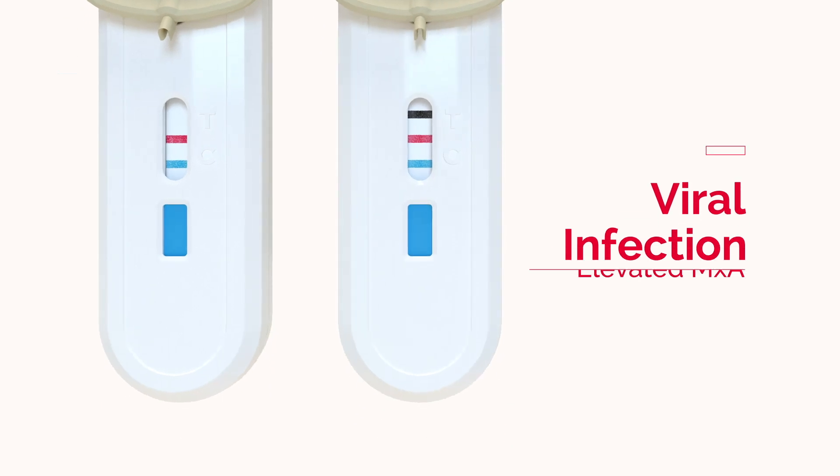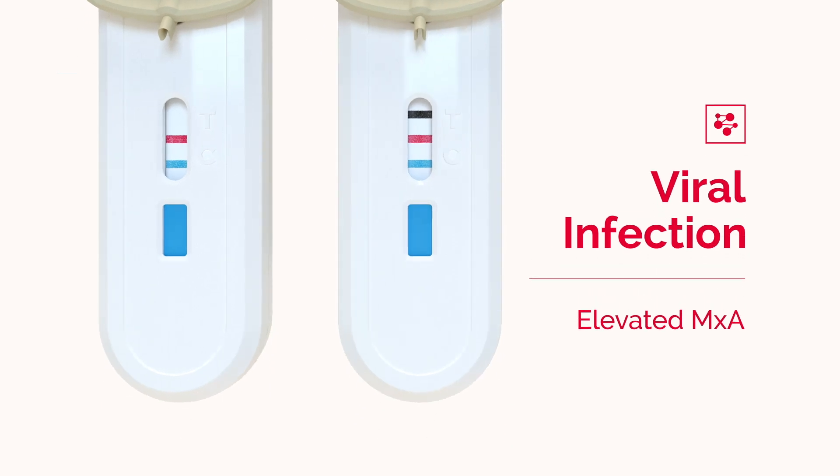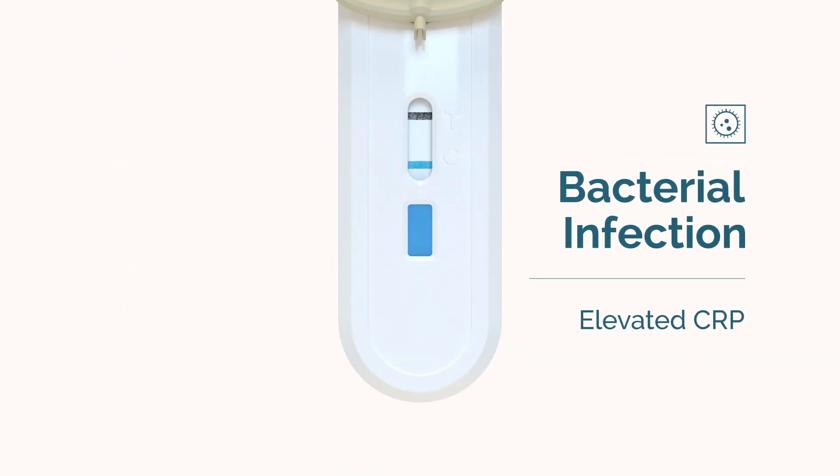The presence of a red line with or without a black line is indicative of a viral infection. The presence of a black line without a red line is indicative of a bacterial infection.